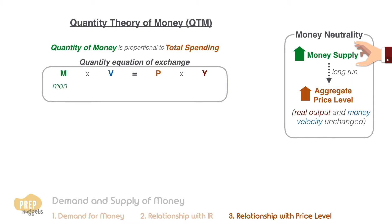M is the quantity of money or money supply. V is the velocity of circulation of money, which is the average number of times each unit of money is used for purchases. P is the average price level, and Y is real output in terms of units sold.